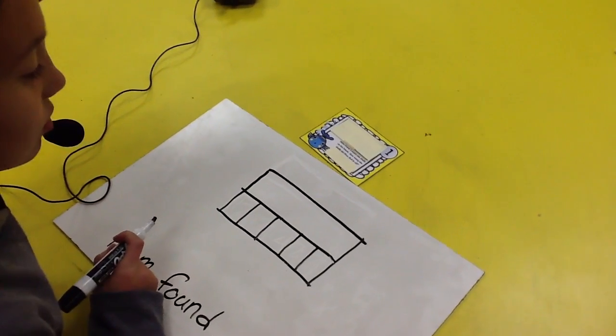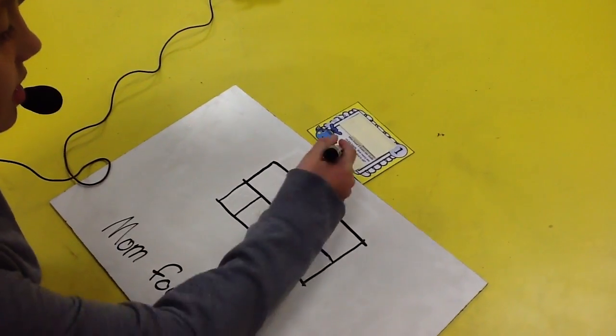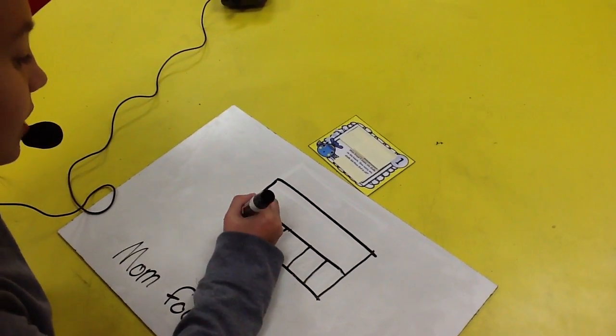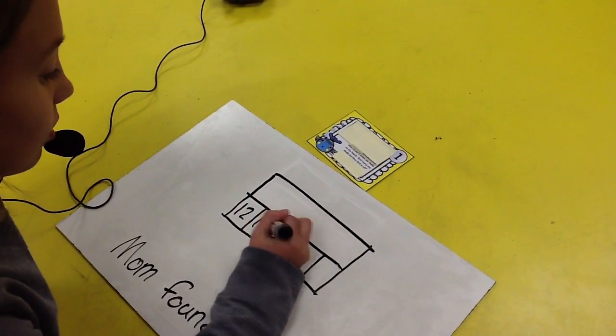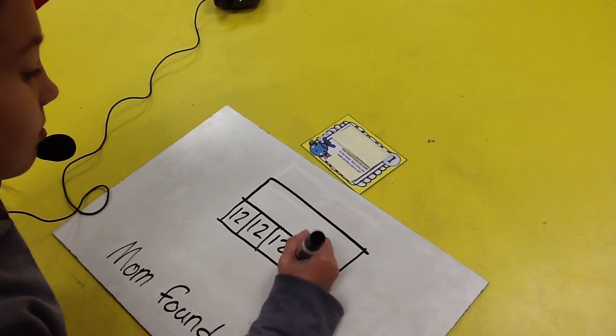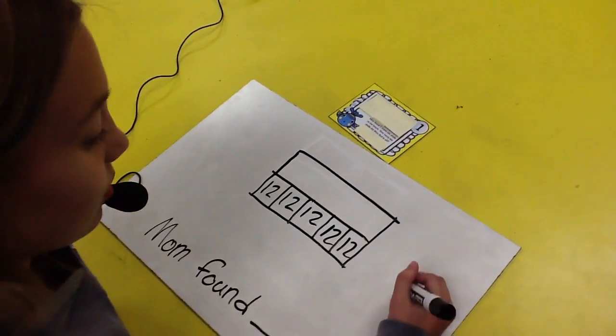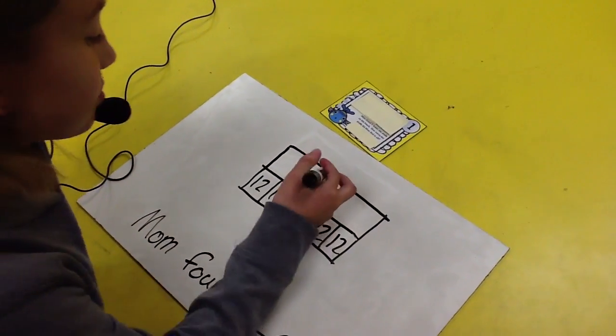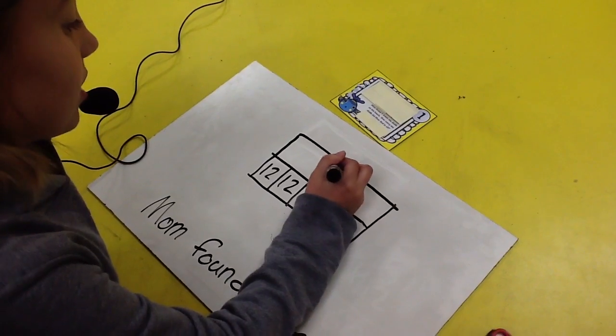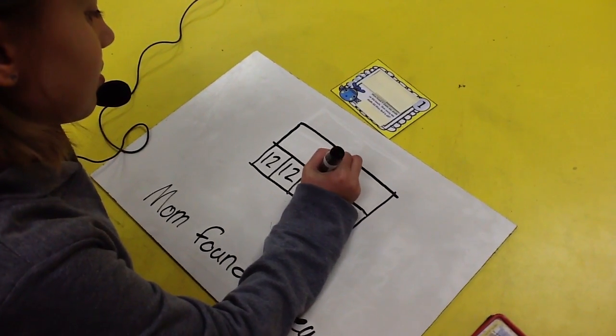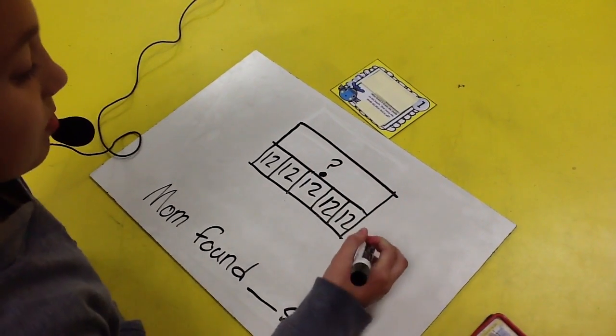And inside my groups, because it says dozen and dozen means twelve, I need to put twelve in all of them. And I do not know my answer yet so I need to put a question mark.